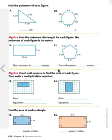We're now on page 818, second page of the chapter review. Let's start with number 9 and 10. Numbers 9 and 10 say find the perimeter of each figure. So in order to find the perimeter, we need to add the sides together to get the perimeter.